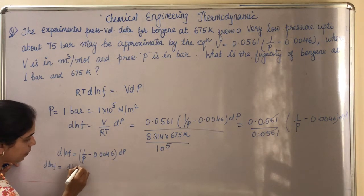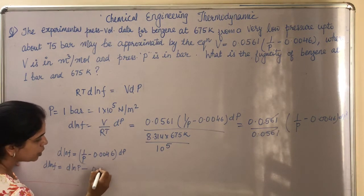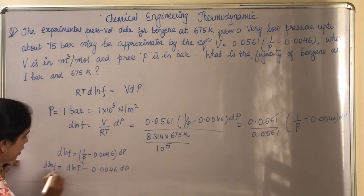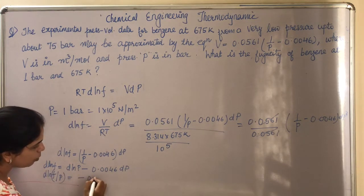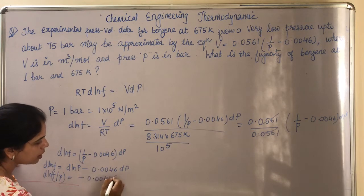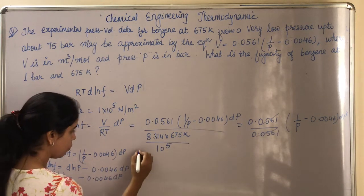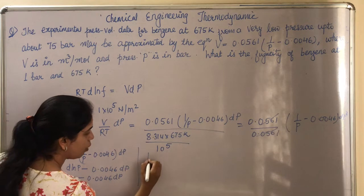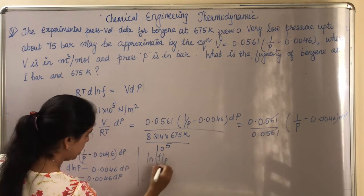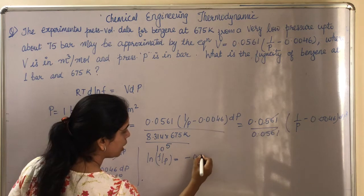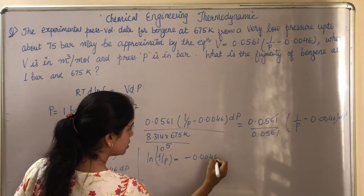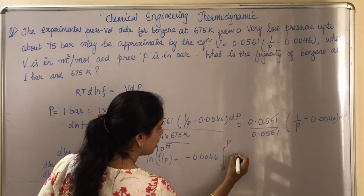This becomes d ln(f/P) = -0.0046 dP. Now integrate this equation, so what we get is ∫d ln(f/P) = ∫-0.0046 dP.